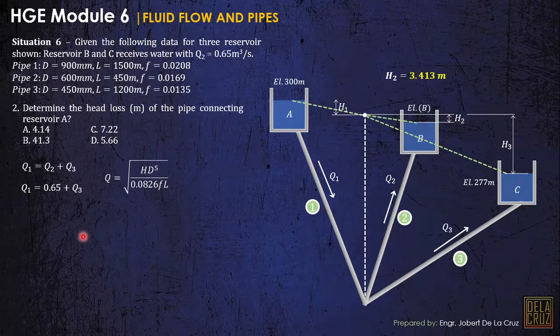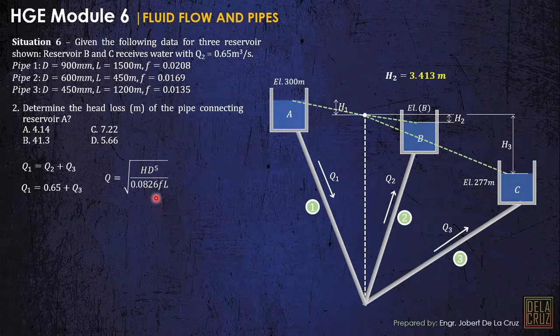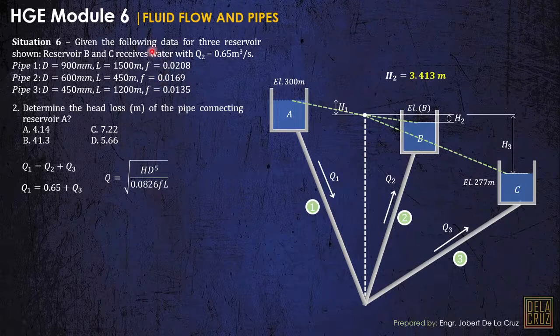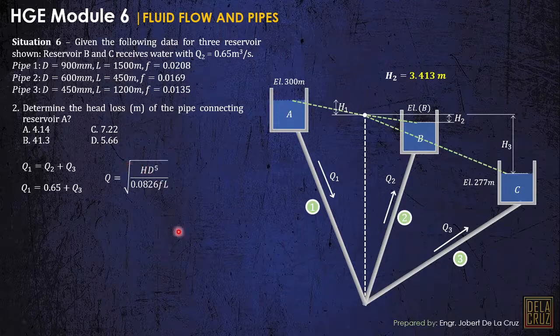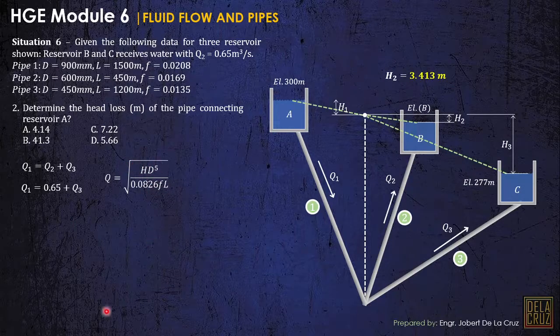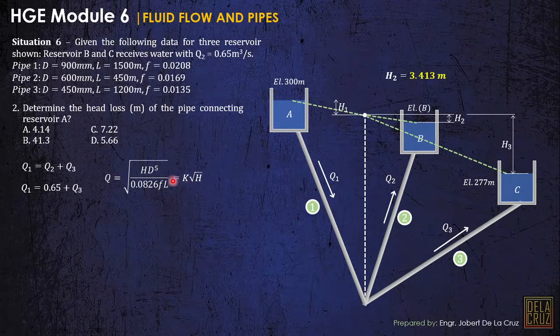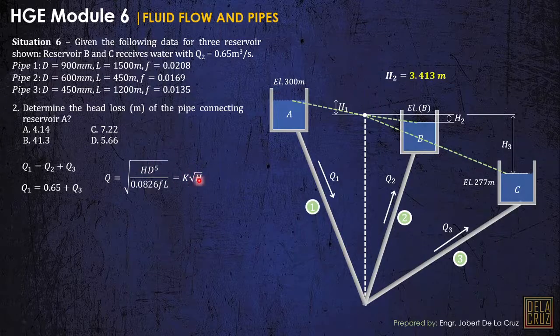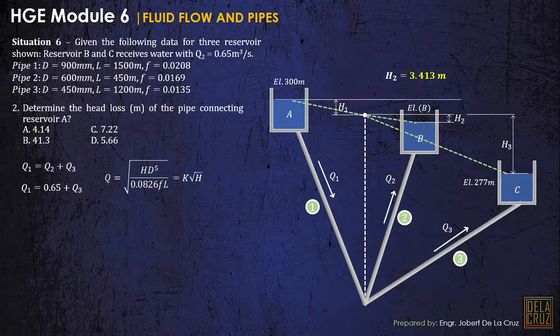Then using the discharge at 2, since that is given, we can have Q1 equals 0.65 plus Q3. Then Q1 and Q3 will be expressed to their corresponding head loss. So we have here our discharge formula. We already tackled this one last time from the Darcy-Weisbach formula. We simplify this one, it will be like this. So what we'll do is get the constant K and the square root of H. That would be the head loss, the corresponding head loss.